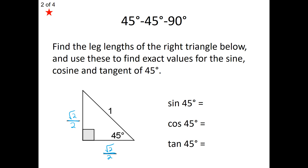Now let's find our sine, cosine, and tangent of these angles. Using SOHCAHTOA, sine is opposite over hypotenuse. This is why it's really nice to let the hypotenuse be 1, because the opposite over the hypotenuse is simply just the opposite — the opposite over 1 just turns into whatever the opposite side is. So sine of 45 degrees gives us a simple ratio of root 2 over 2.